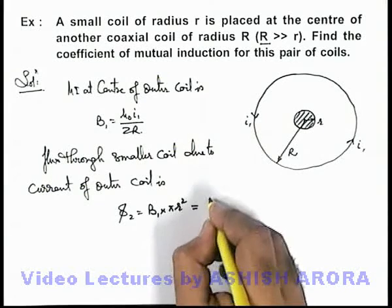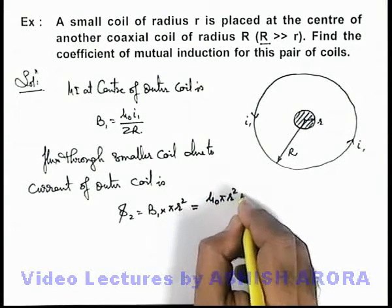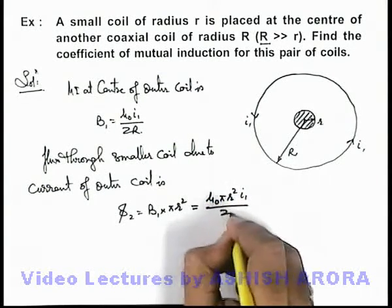Here we can assume that the magnetic induction will remain almost constant throughout the inner coil. So this will be mu-not pi r square i1 by twice of capital R.